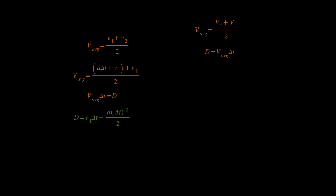We do the same thing here. By noticing that delta t is equal to v2 minus v1 over the acceleration when acceleration is constant, we can say that the distance will be equal to the average velocity, which is v2 plus v1 over 2, times delta t, which is v2 minus v1 over a. And so, v2 squared minus v1 squared will be equal to 2 times a times d.